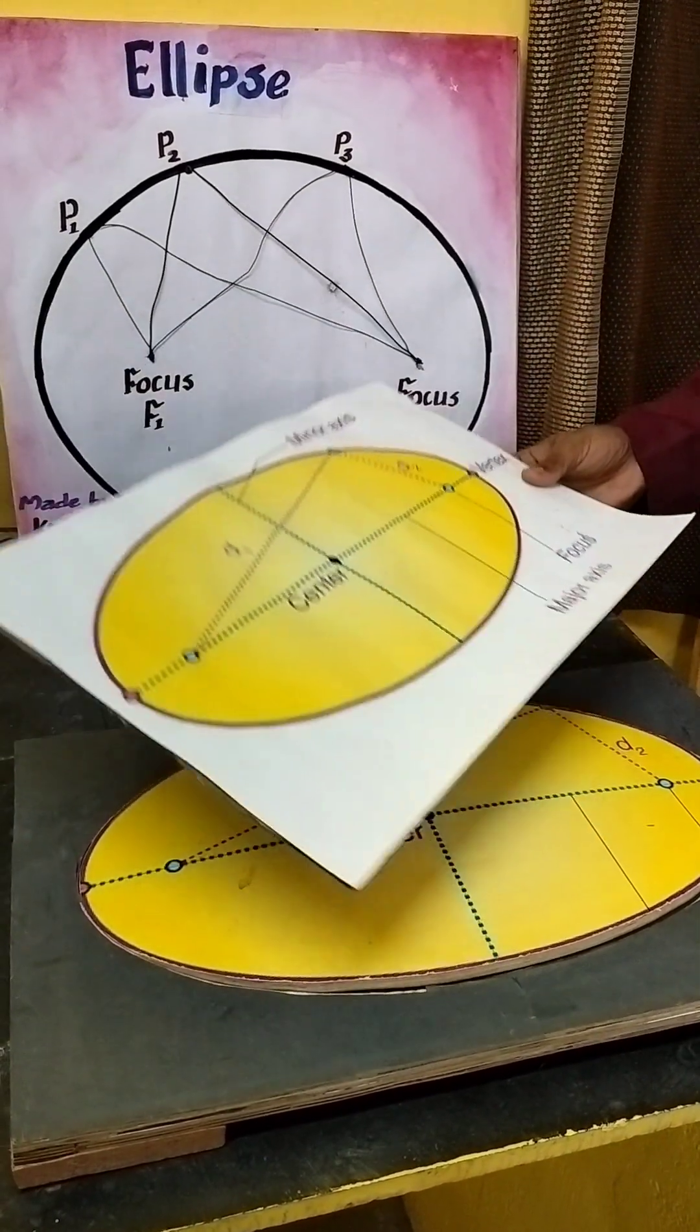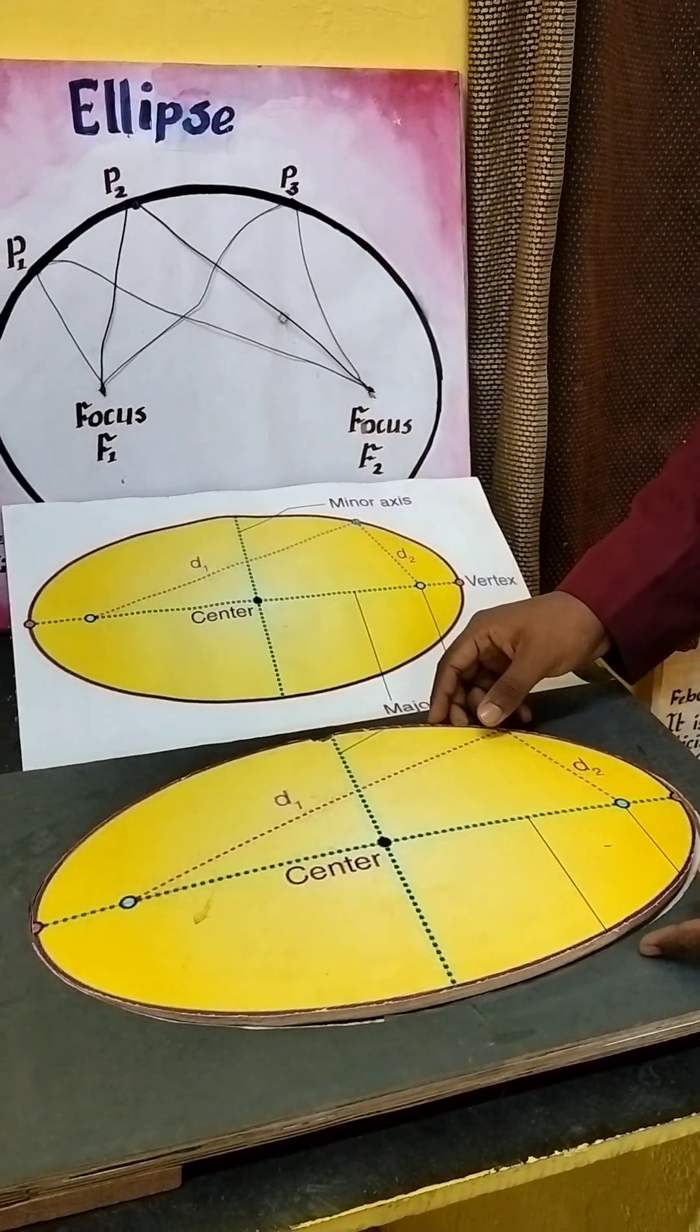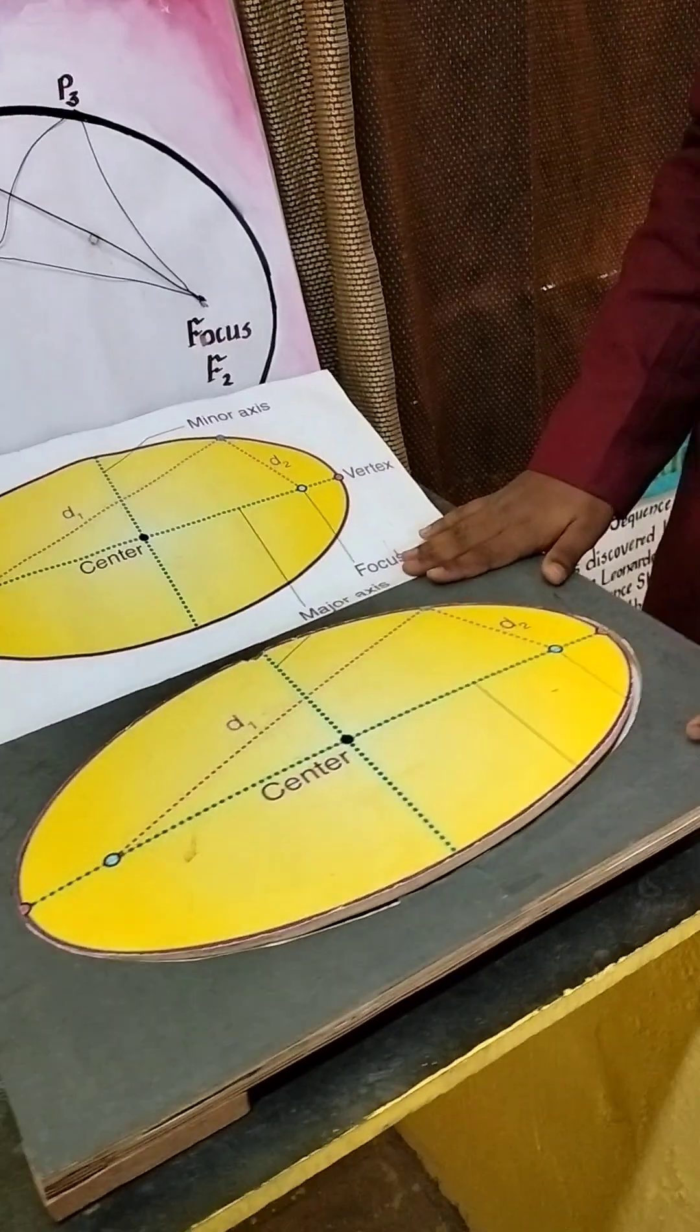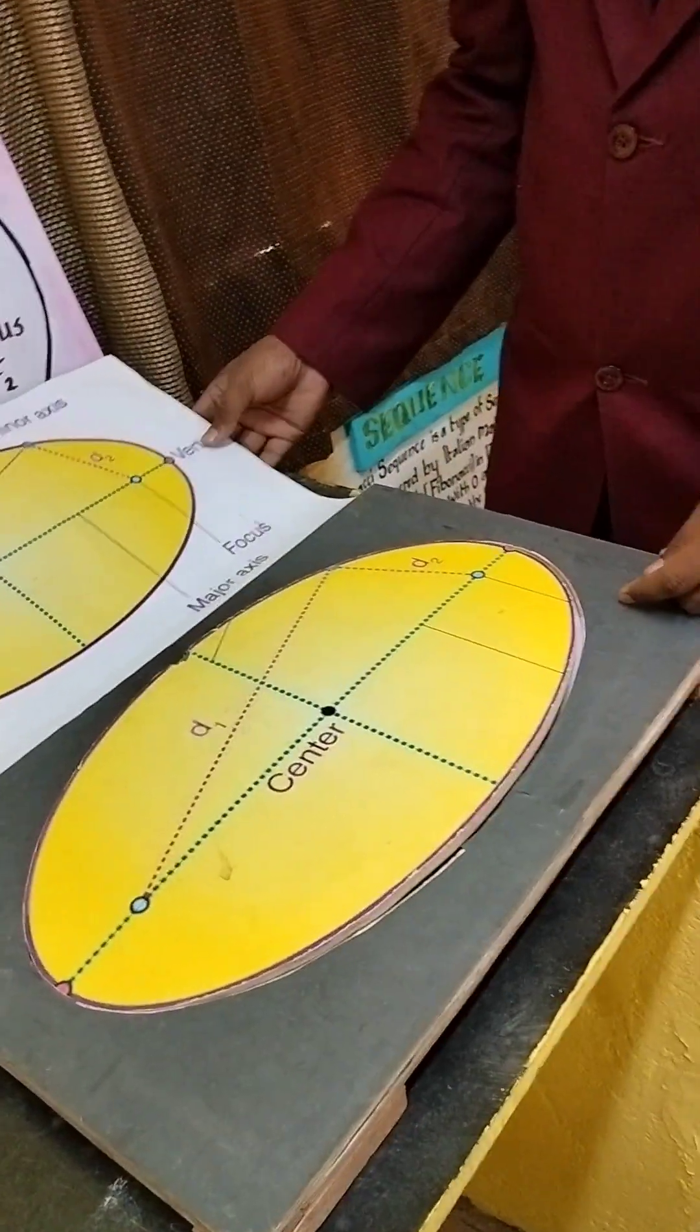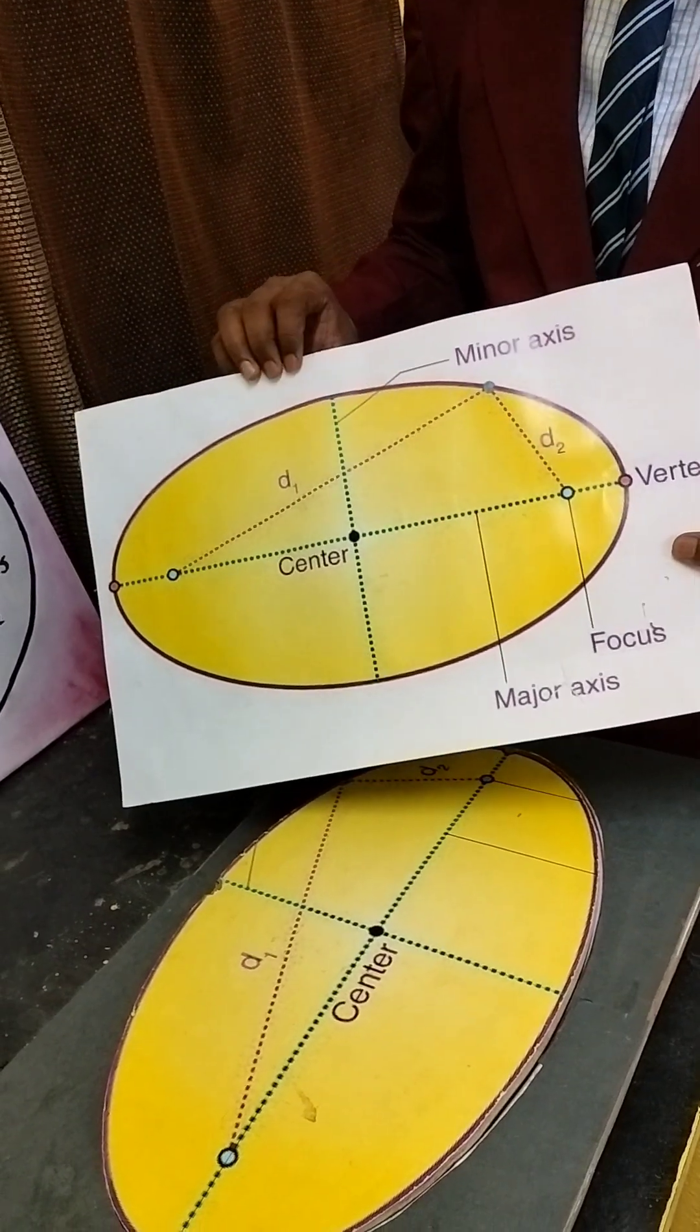Today we are going to talk about the properties of an ellipse through an activity with this small model. Let's first understand what is an ellipse. An ellipse is a diagram which has a locus like this represented here.